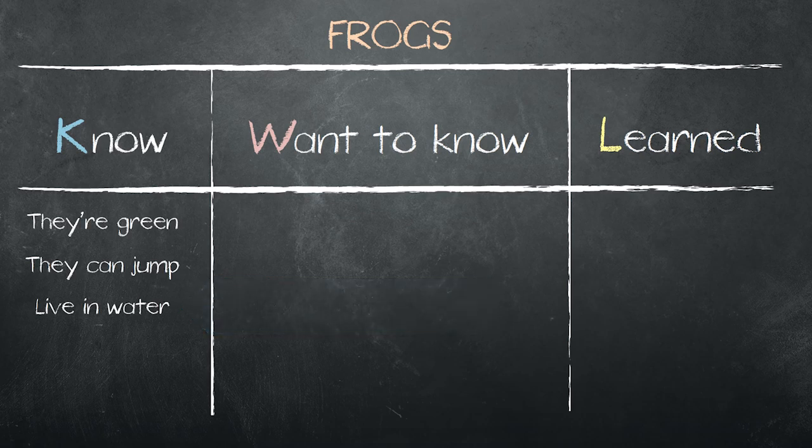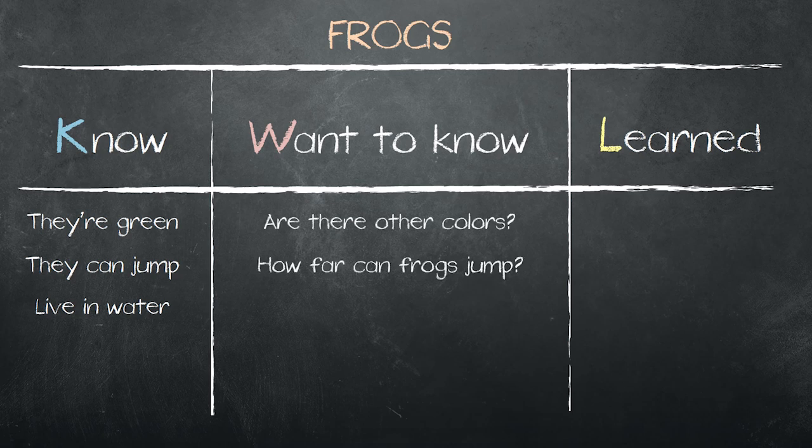Next, we ask the students what they WANT to know, and we make a list in the middle column. Are there other colors? How far can frogs jump? Where else do they live? If your students have trouble coming up with ideas, you can guide them and make suggestions.